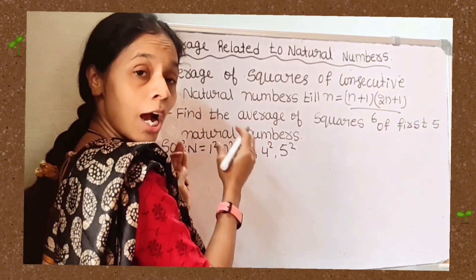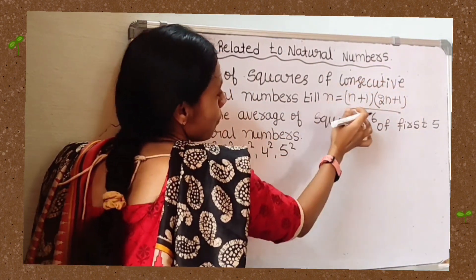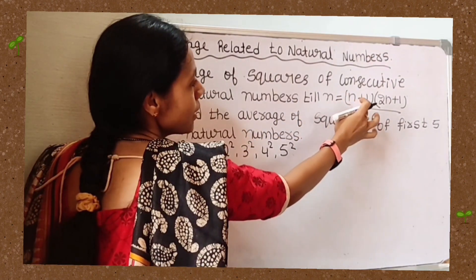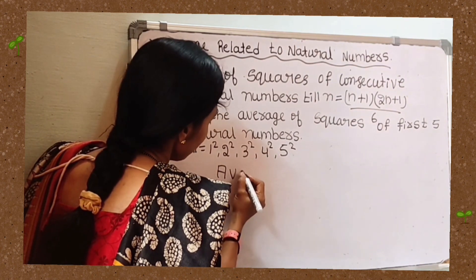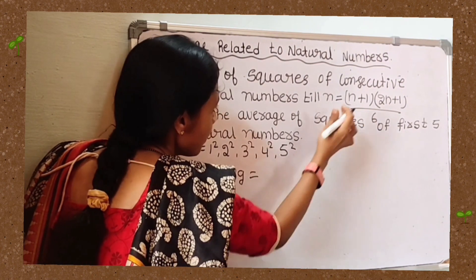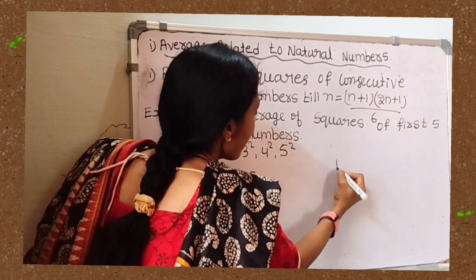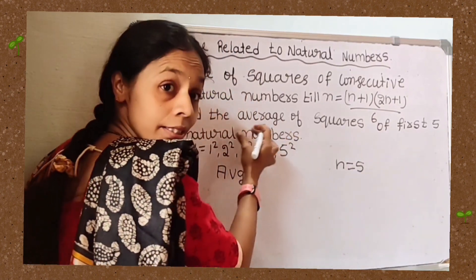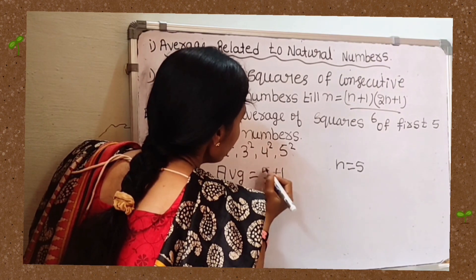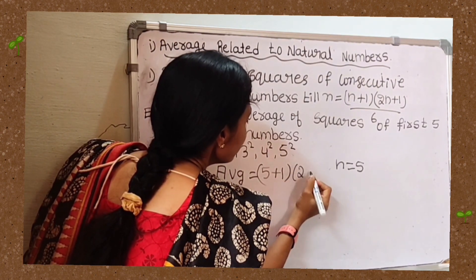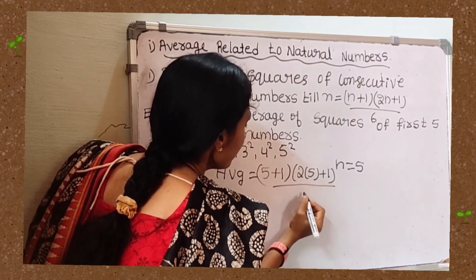To find the average, we use the formula: average equals n plus 1 into 2n plus 1, divided by 6. The value of n is 5 since we have the first five natural numbers in square form. So we substitute: 5 plus 1 into 2 times 5 plus 1, divided by 6.